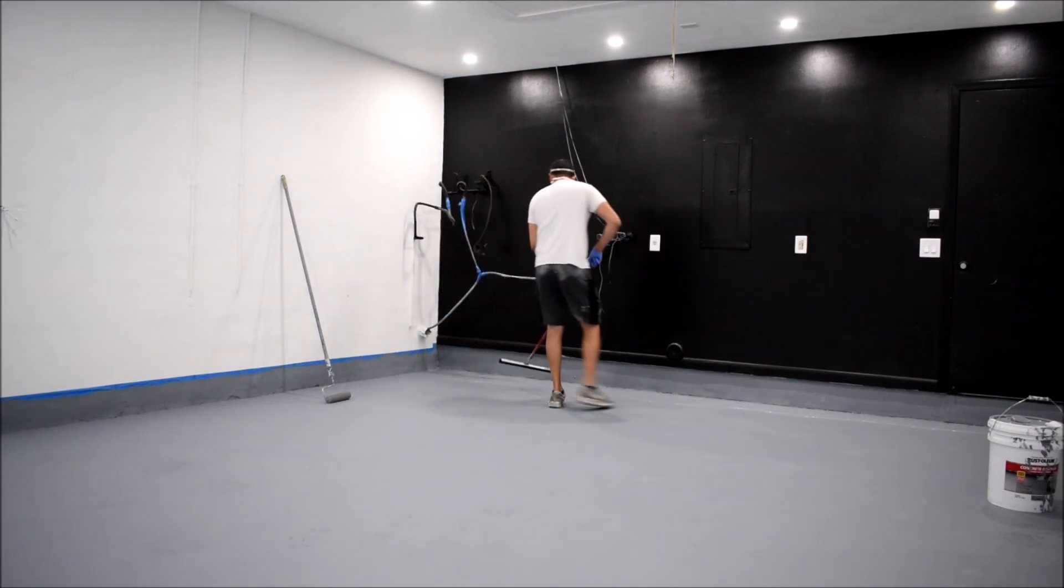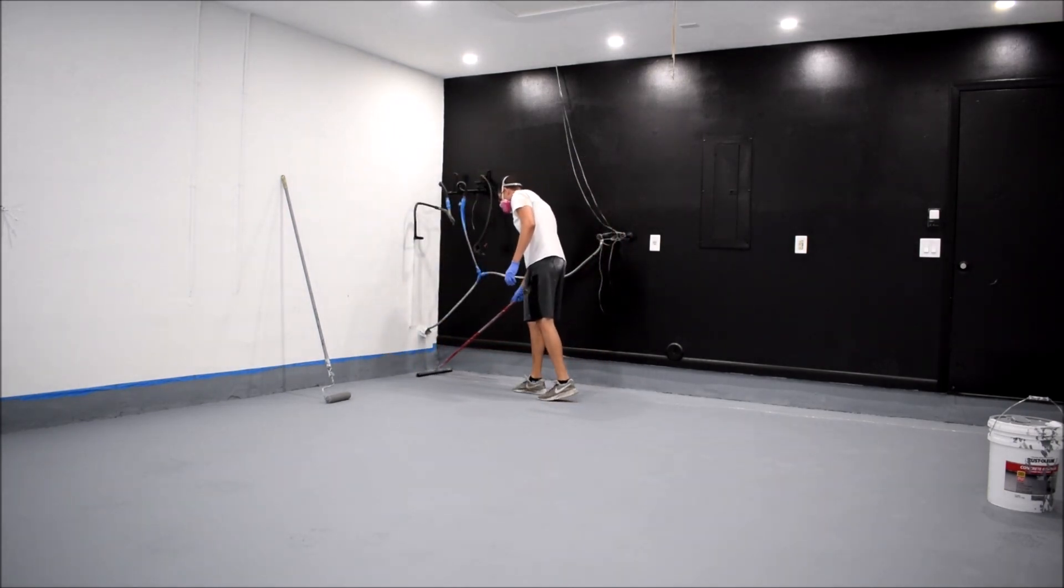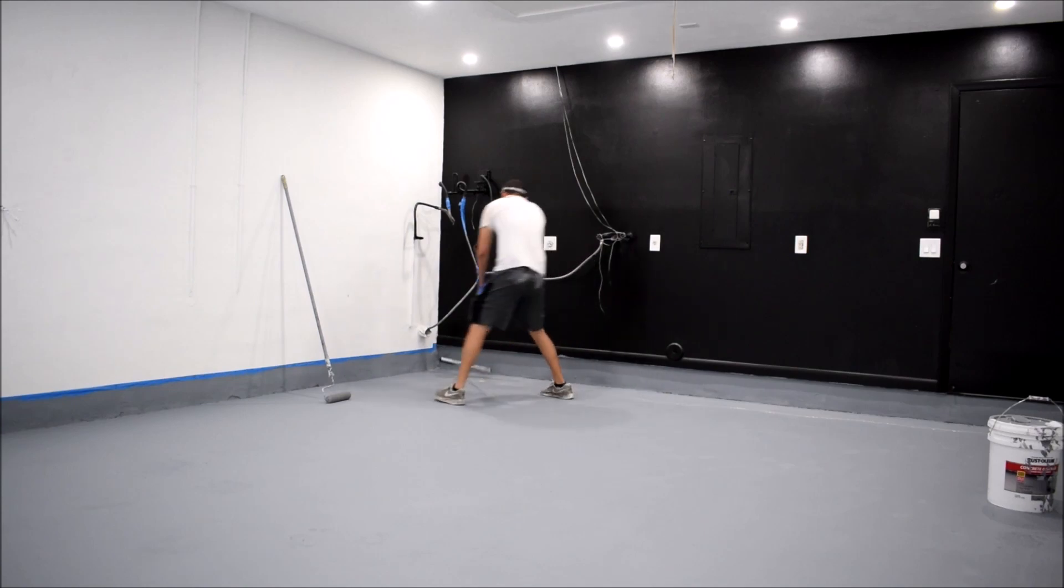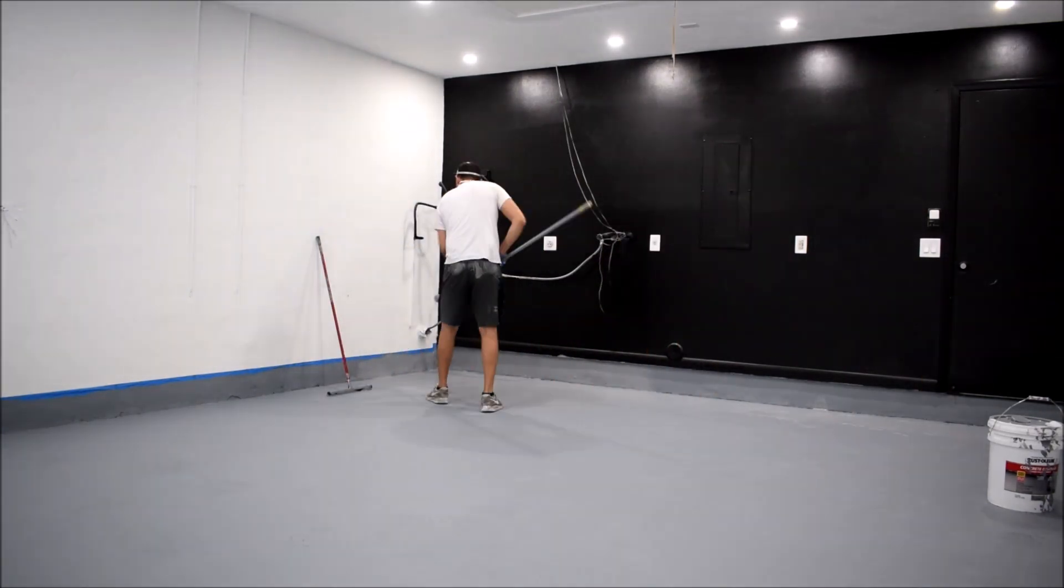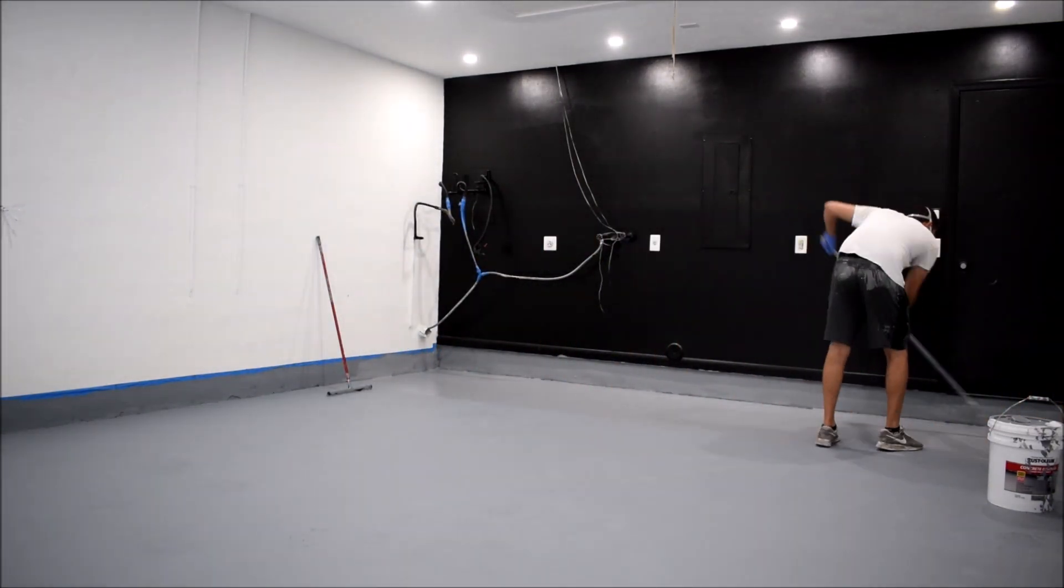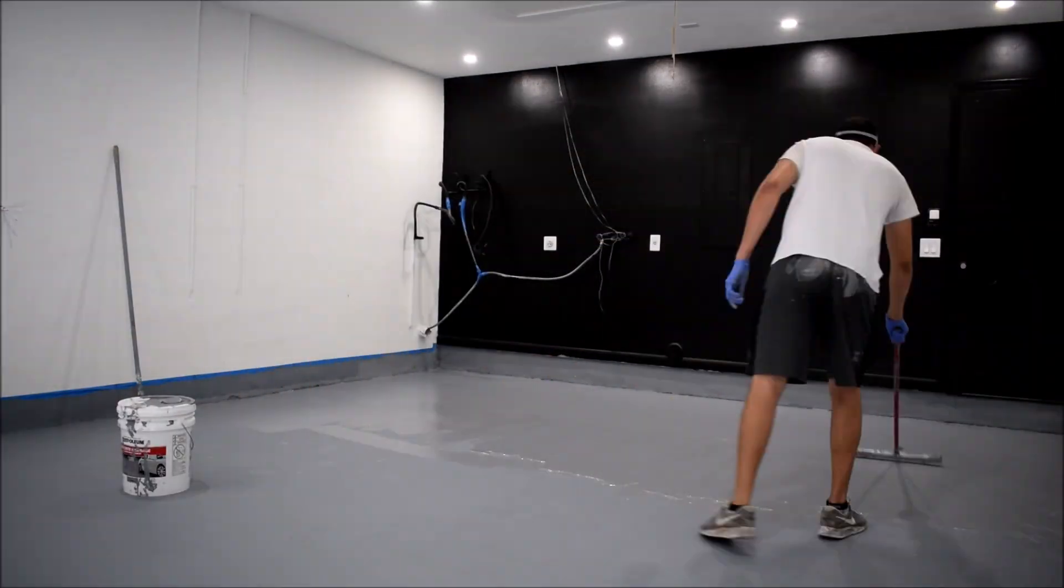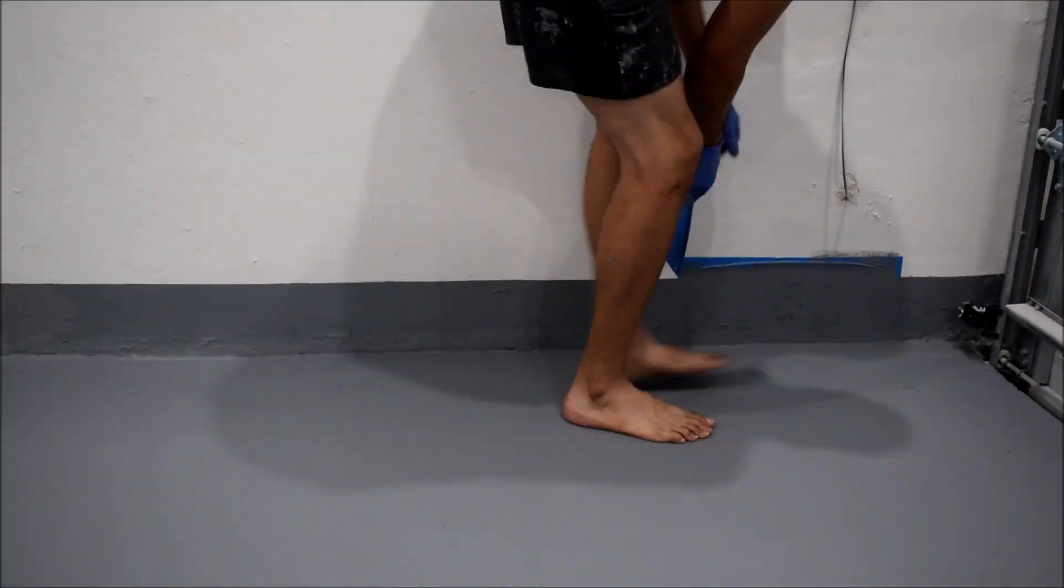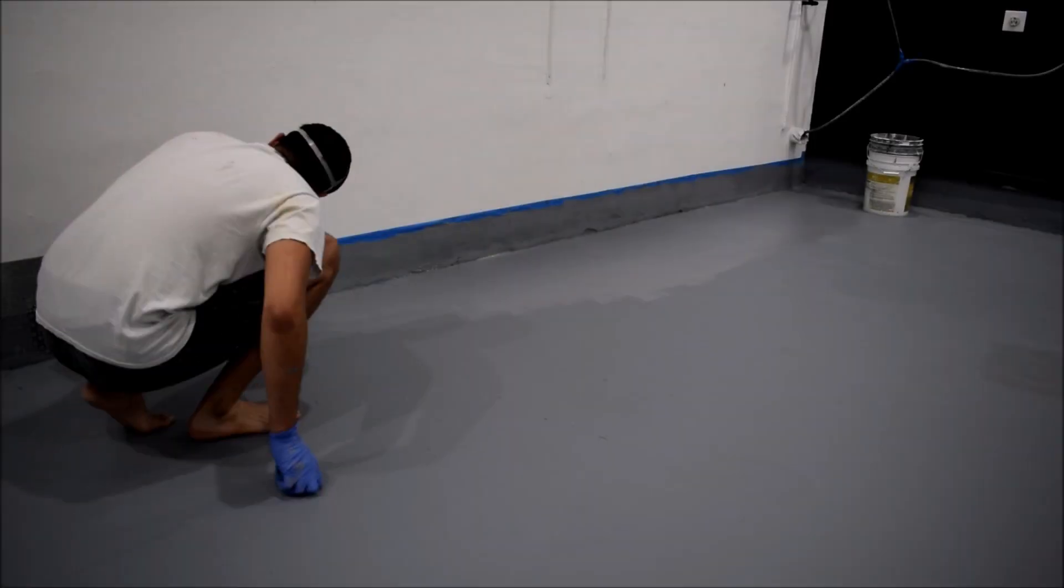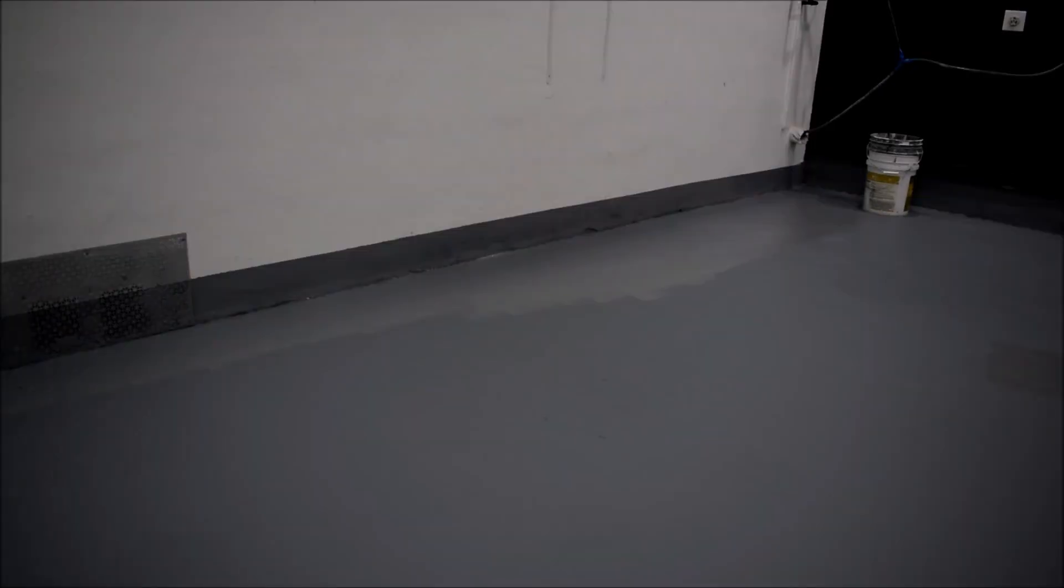The second coat is supposed to be applied within 48 hours of the first. I got all of that done without stepping into the wet parts. I actually touched up the walls, but I spread the excess on the floors just to not waste it.